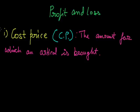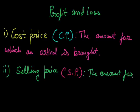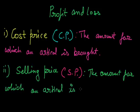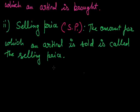The second one is selling price, written in short as SP. The amount for which an article is sold is called the selling price. For example, if I bought an article at Rs. 20, then the cost price is Rs. 20, and if I sell that article to my friend at Rs. 50, then the selling price of that article will be Rs. 50.